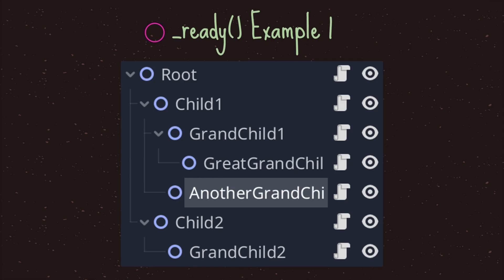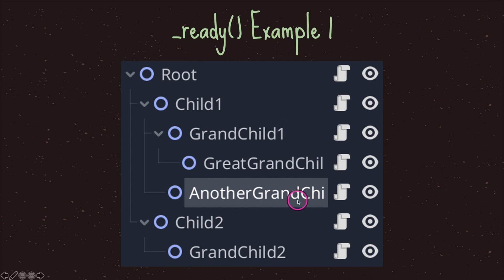Let's take a look at how the ready virtual method calls all of the nodes in the scene. In this example we have a fairly straightforward scene: one root node with two children, child one and child two. Child one also has two children — grandchild one and another grandchild one — and grandchild one also has a child called great grandchild one.